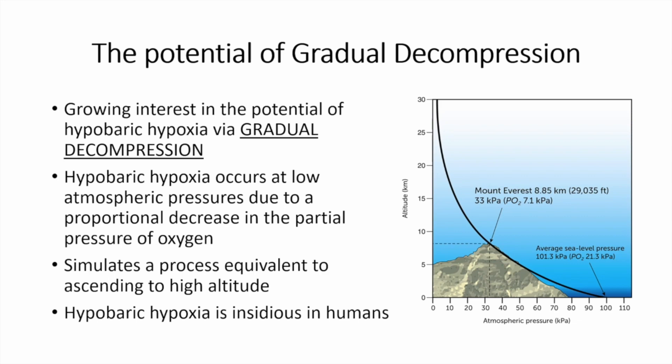Hypobaric hypoxia results in hypoxia due to low pressure conditions. As the atmospheric pressure falls, there is also a proportional decrease in the partial pressure of oxygen, simulating a process equivalent to ascending to a high altitude. As people ascend up Mount Everest, the atmospheric pressure falls and therefore the partial pressure of oxygen also falls — which is the reason why people climbing Mount Everest often need supplementary oxygen. Hypobaric hypoxia is considered insidious in humans, where people often have no idea they're becoming hypoxic, and therefore only have a very short timeframe to act accordingly before cognitive impairment and loss of consciousness ensues.